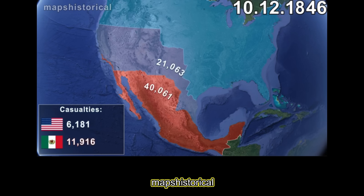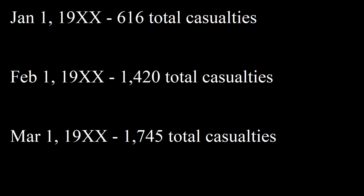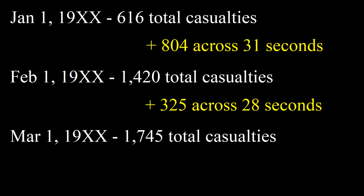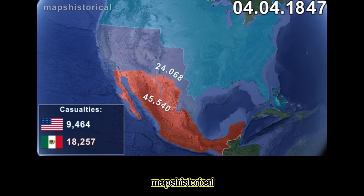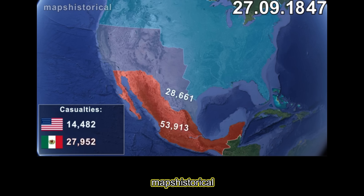A lot of these videos will show either the number of casualties during a war or the size of the army on either a specific frontline or as a whole. The numbers are changing fast and smoothly, and this is done by using keyframes — basically, you put the numbers at different points and the program auto-fills in the gaps by having the number count up or down at whatever speed it takes to get from number X to number Y. It certainly looks cool and flashy, but there are many issues with using this.